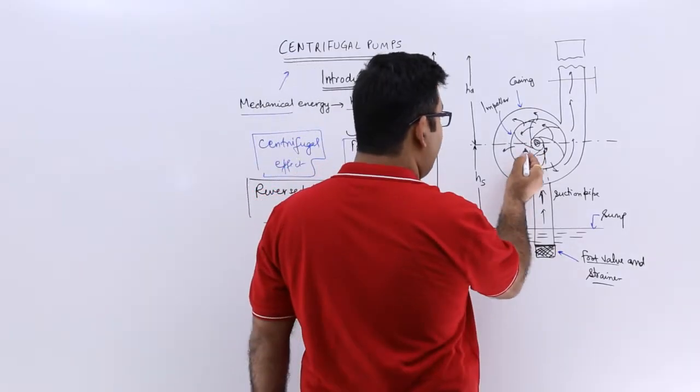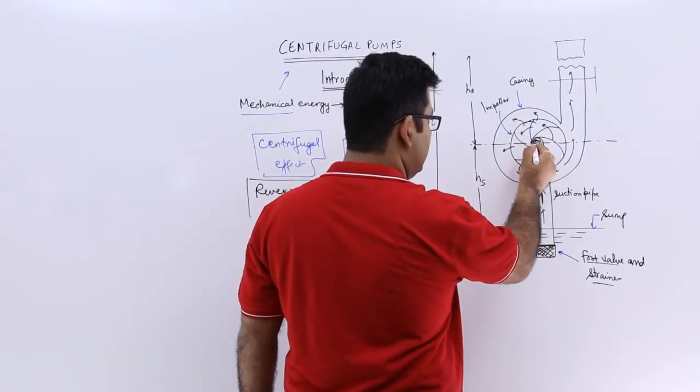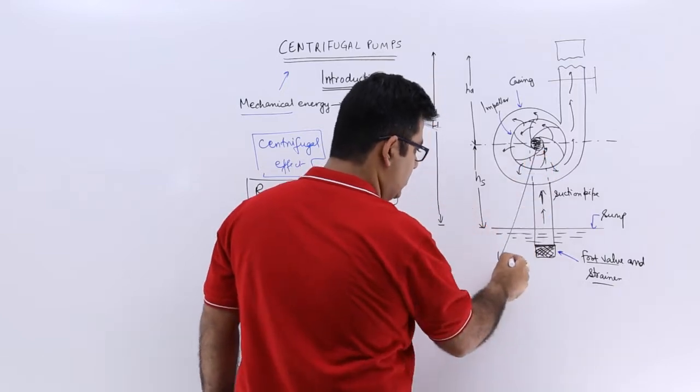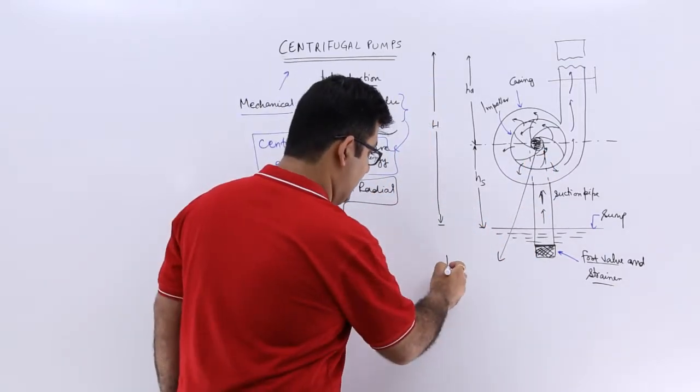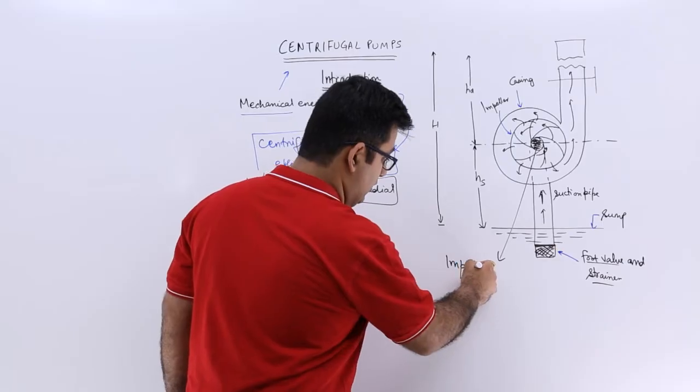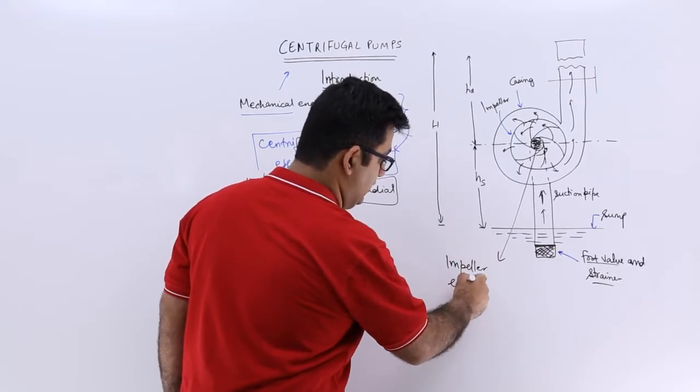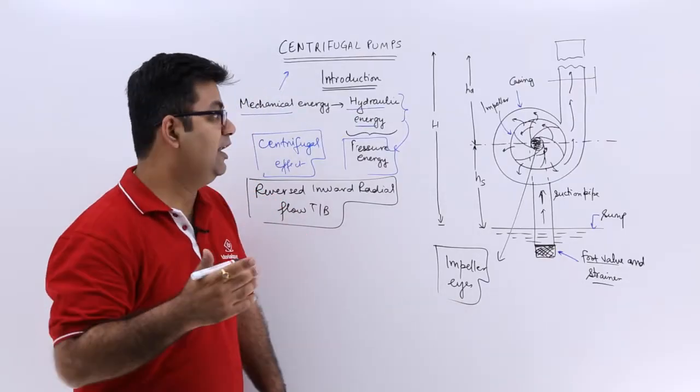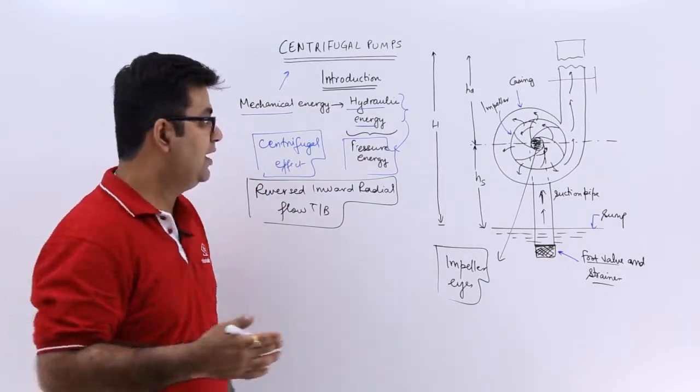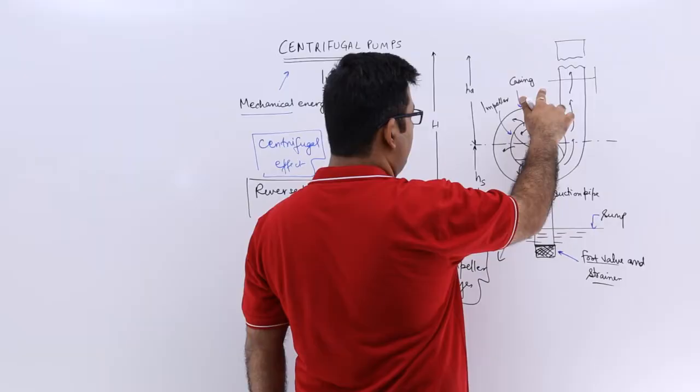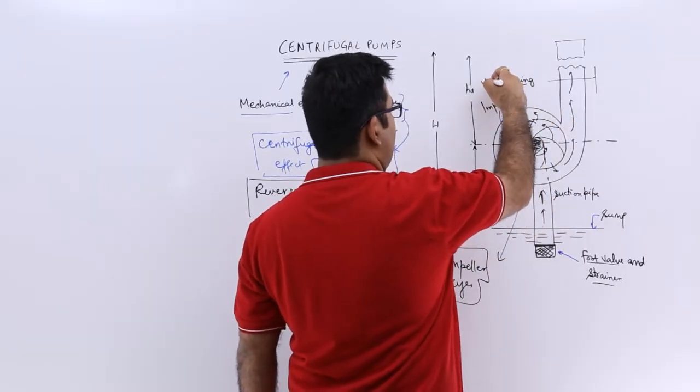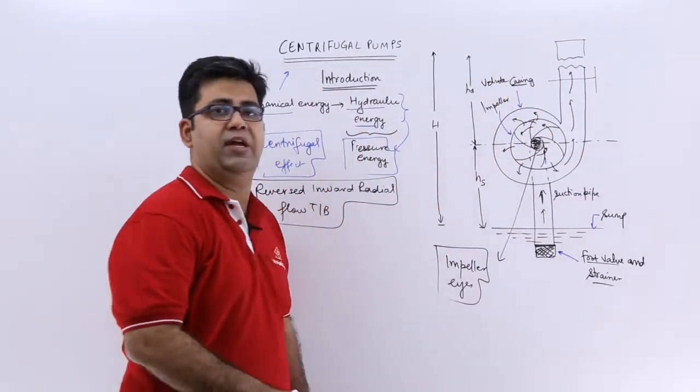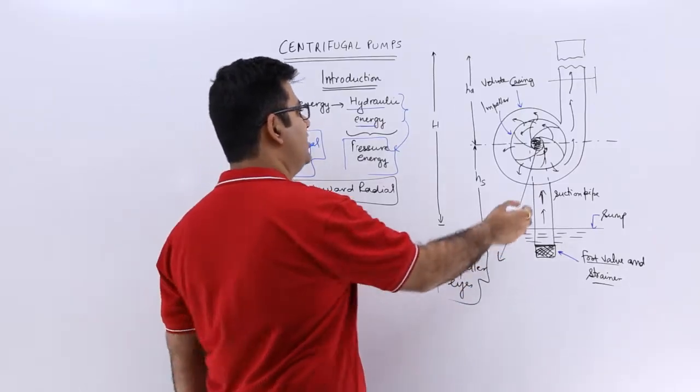Enters the impeller eye. So this part is called the eye of the impeller and this is where the suction happens or the inlet is there for the liquid in a centrifugal pump. Then it rotates, comes out, collects in this casing, this is called the spiral or the volute casing.